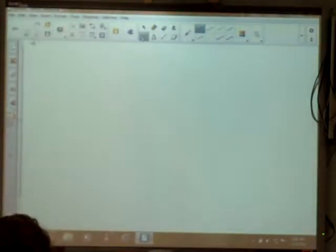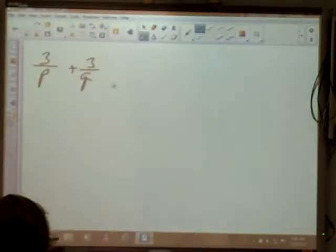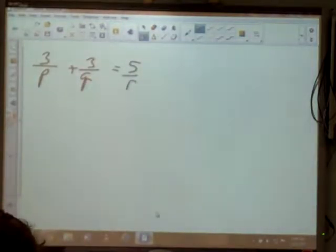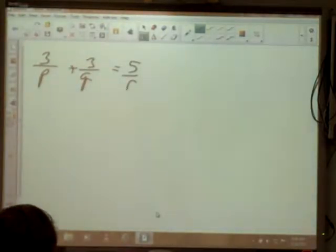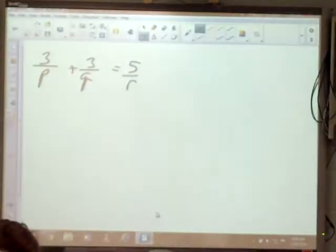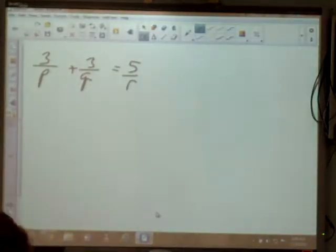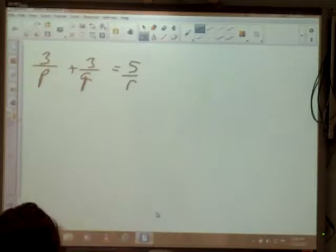To start with here, we're going to transform some formulas. This first one says 3 over P plus 3 over Q equals 5 over R. Earlier last week, we were adding and subtracting. Since that's an addition problem, we could add. But we're not going to. What would our common denominator be? PQ, very good.